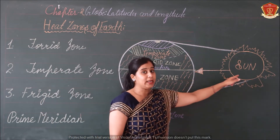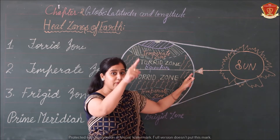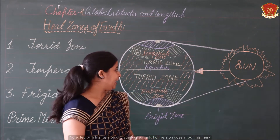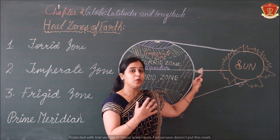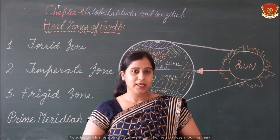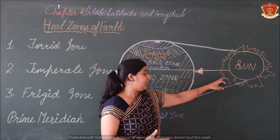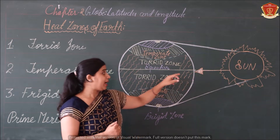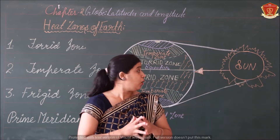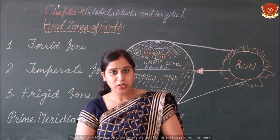Aap dekh rahe ho — sun's direct rays pad rahi hain is zone pe. Kyunki maine aapko bataya hai, great circle banta hai; circumference sabse zyada equator pe bun raha hai. So basically you can understand why there is heat here — kyunki sun se yeh sabse zyada closest hai, nazdik hai. Agar sun itna bada star hai, aur uske direct heat pad rahi kisi zone pe, then it means it receives the maximum heat. Aur yahan pe sabse zyada garmi hogi. Have you understood the Torrid zone?